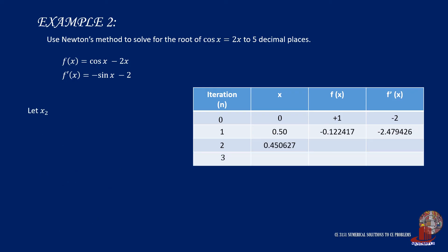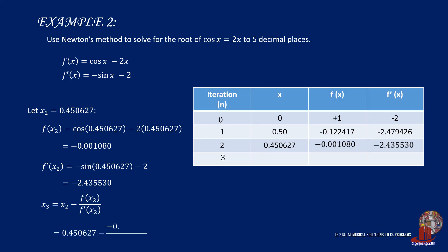Take the next iteration by using x sub 2, which is 0.450627 into the two functions. The results show negative 0.001080 for function of x sub 2. f' of x sub 2 shows negative 2.435530. Again, plug these values into the equation and get 0.450184. This is x sub 3.